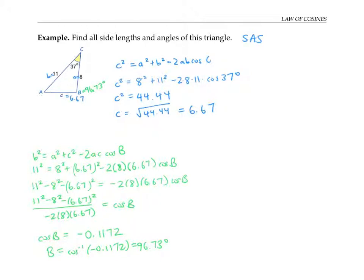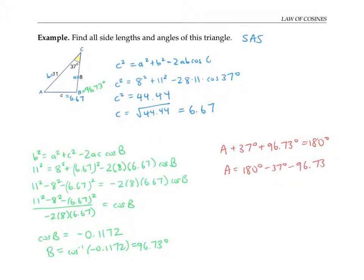The last thing I need to do is solve for angle A. I could use the law of cosines again, but a simpler approach is to use the fact that the sum of the three angles equals 180 degrees. So A plus 37 degrees plus 96.73 degrees equals 180 degrees, meaning A equals 180 minus 37 minus 96.73, which works out to 46.27 degrees.